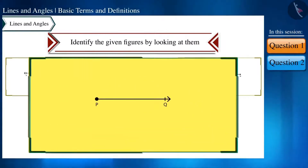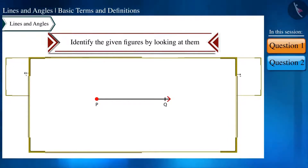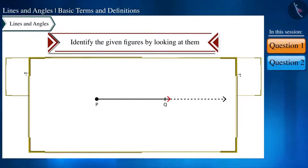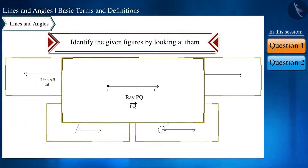In the second figure, one end is a point and the other end has an arrow, meaning it can be extended in only one direction. So this is a ray — ray PQ.